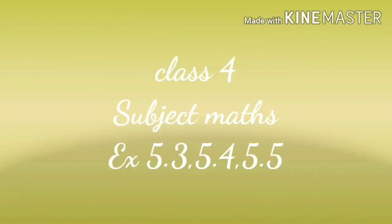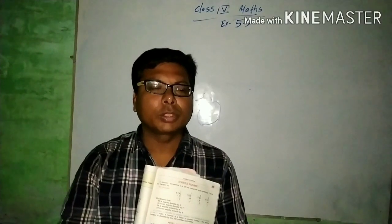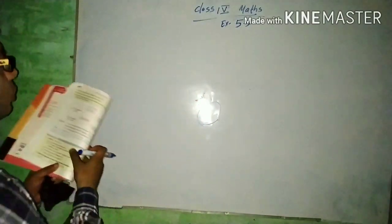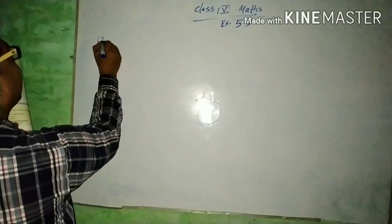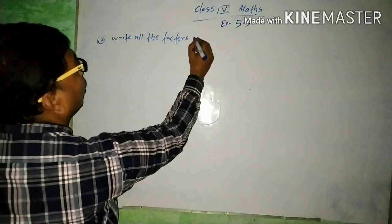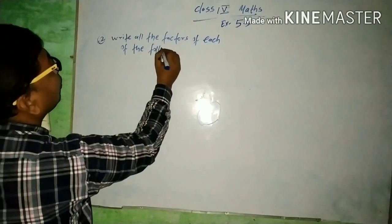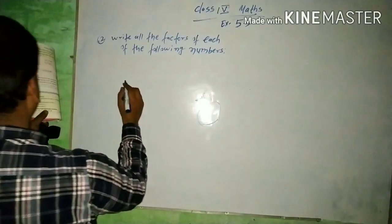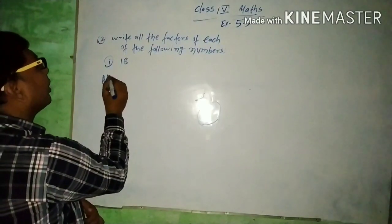Now let us look at factors. We need to find all the factors of given numbers. The first question asks: what are all the factors of 18?